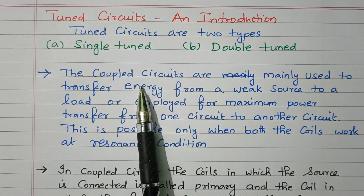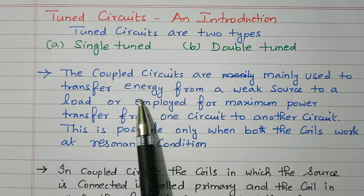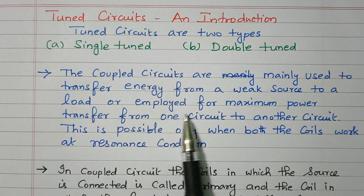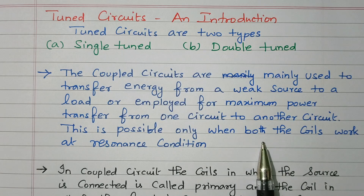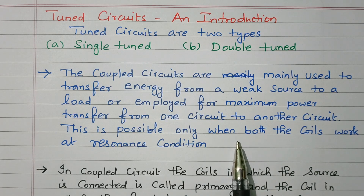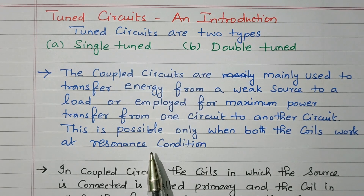Tuned circuits are framed from coupled circuits. Coupled circuit means inductors are coupled together. This coupled circuit is mainly used for energy transfer from a weak source to the load, or maximum power transfer from one circuit to another. In that case, both coils must be at resonant condition — then only it is possible.